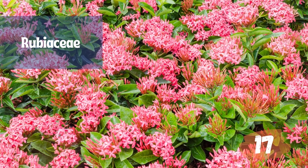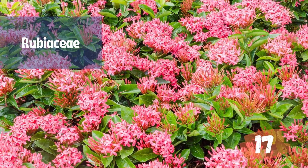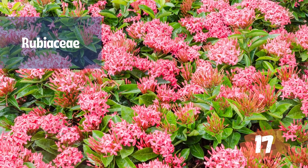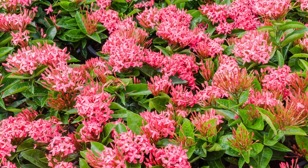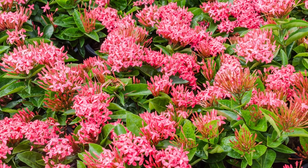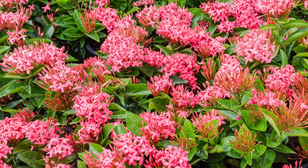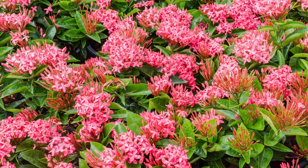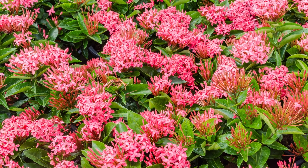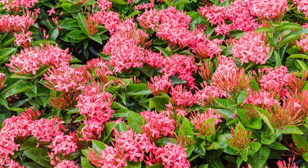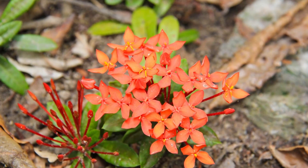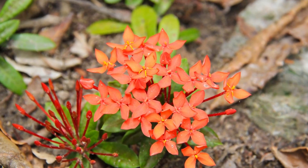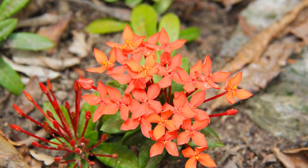The Rubiaceae are a family of flowering plants commonly known as the coffee, madder, or bedstraw family. It consists of terrestrial trees, shrubs, lianas, or herbs recognizable by simple opposite leaves with interpetiolar stipules and sympetalous actinomorphic flowers. The Rubiaceae are morphologically easily recognizable as a coherent group by a combination of characters: opposite or whorled leaves that are simple and entire, interpetiolar stipules, tubular sympetalous actinomorphic corollas, and an inferior ovary.